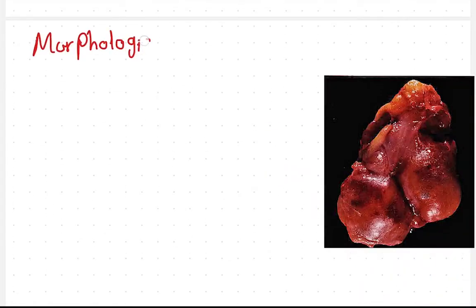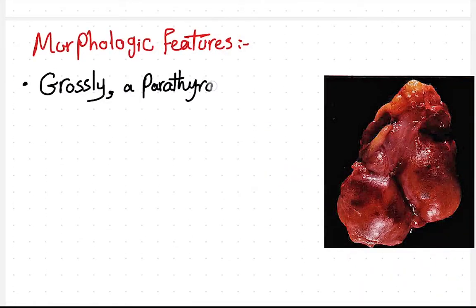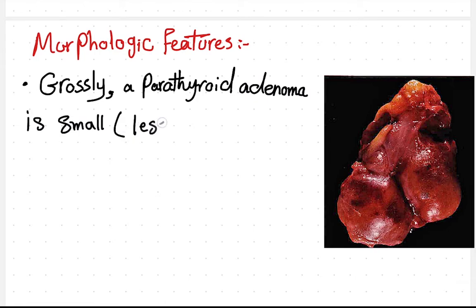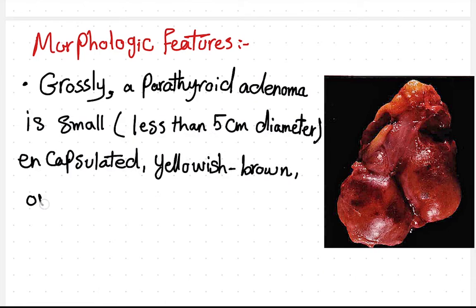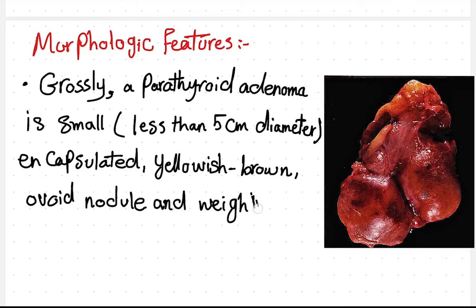Morphologic features. Grossly, a parathyroid adenoma is small, less than 5 cm in diameter, encapsulated, yellowish-brown, ovoid nodule, and weighing up to 5 grams or more.